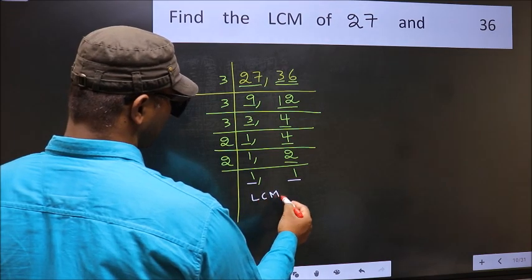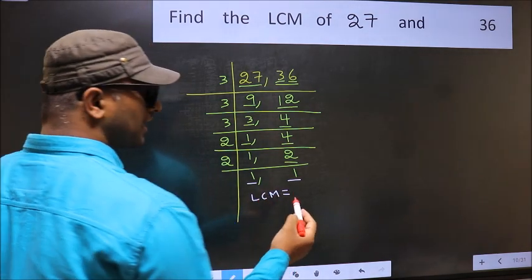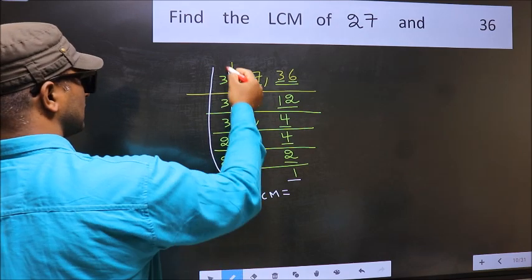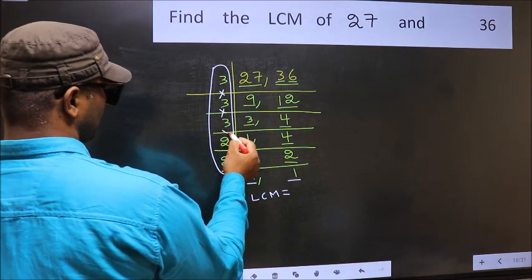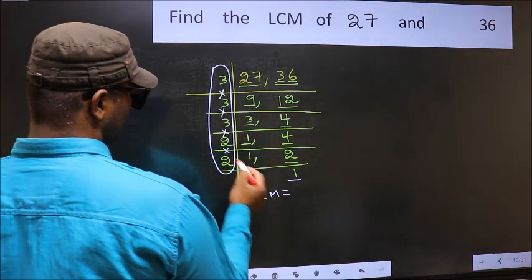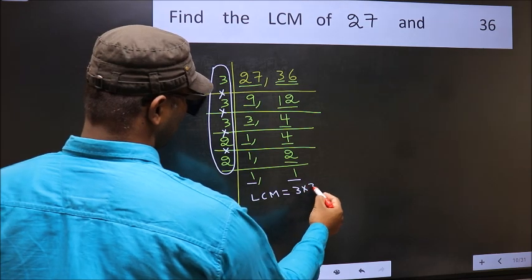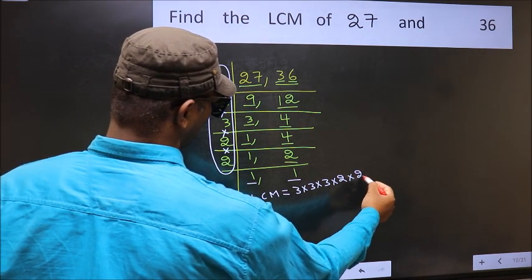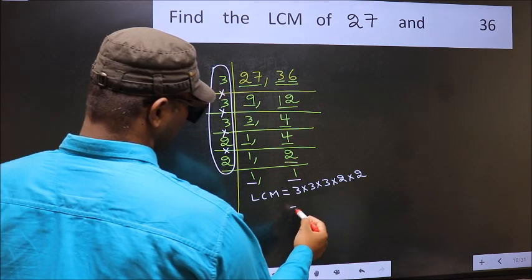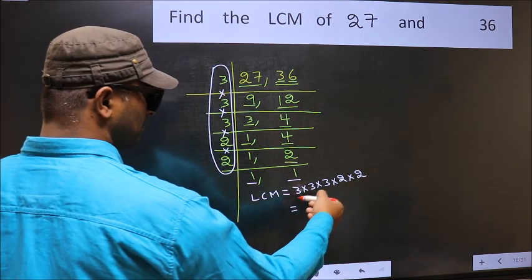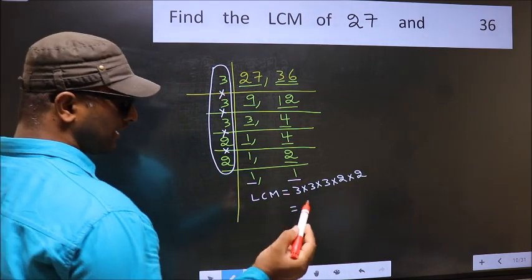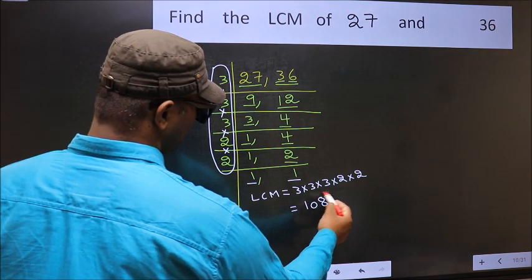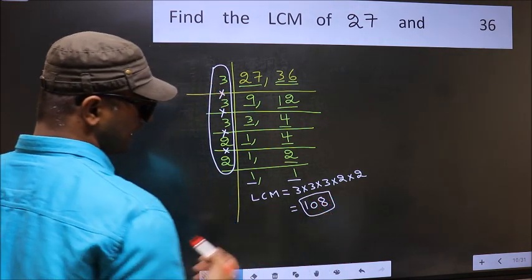So our LCM is the product of these numbers. That is 3 into 3 into 3, into 3, into 2, into 2. When we multiply these numbers, we get 108. So 108 is our LCM.